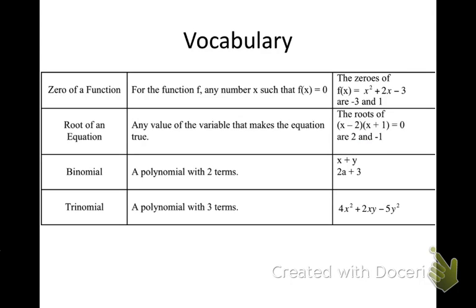Vocabulary here: the zero of a function. This is what we're going to be finding. For the function f, any number x such that f(x) equals zero. All day today, we're going to be setting f(x) equal to zero. We're going to be substituting zero in for f(x), trying to find the zeros. It's a lot easier to solve when you solve it with the zeros.